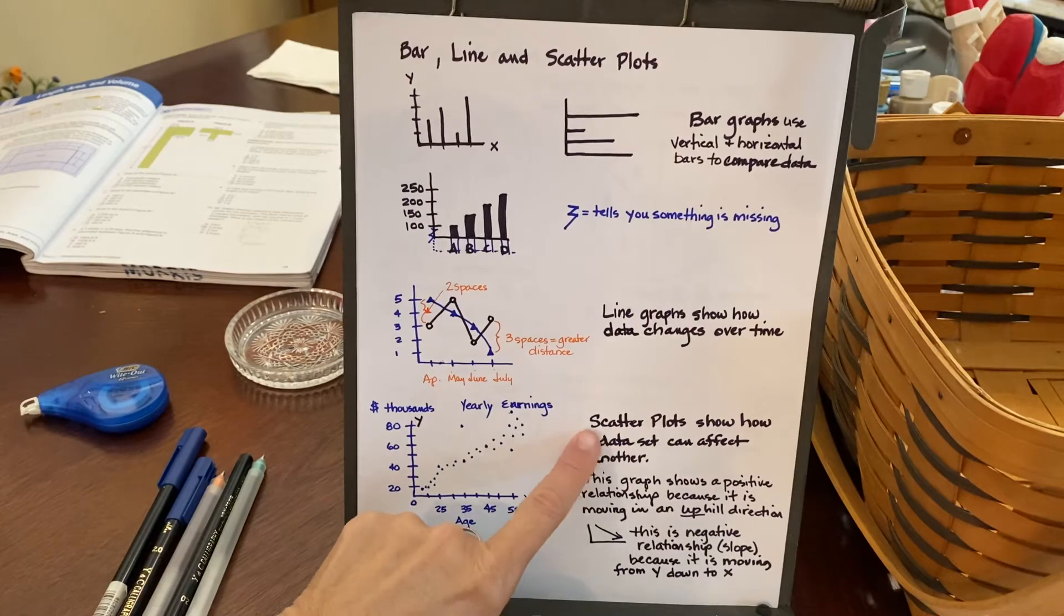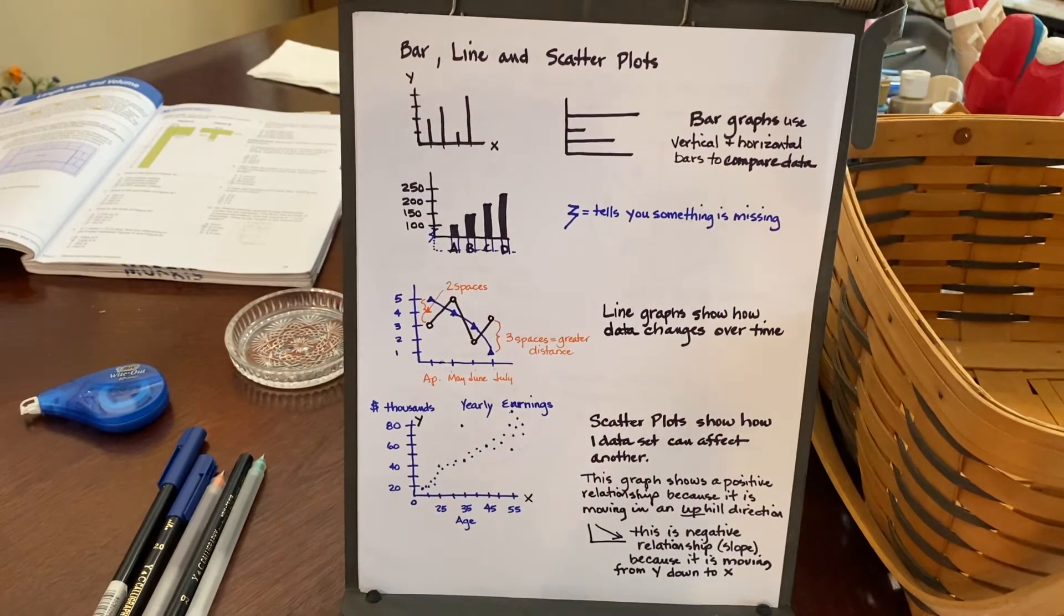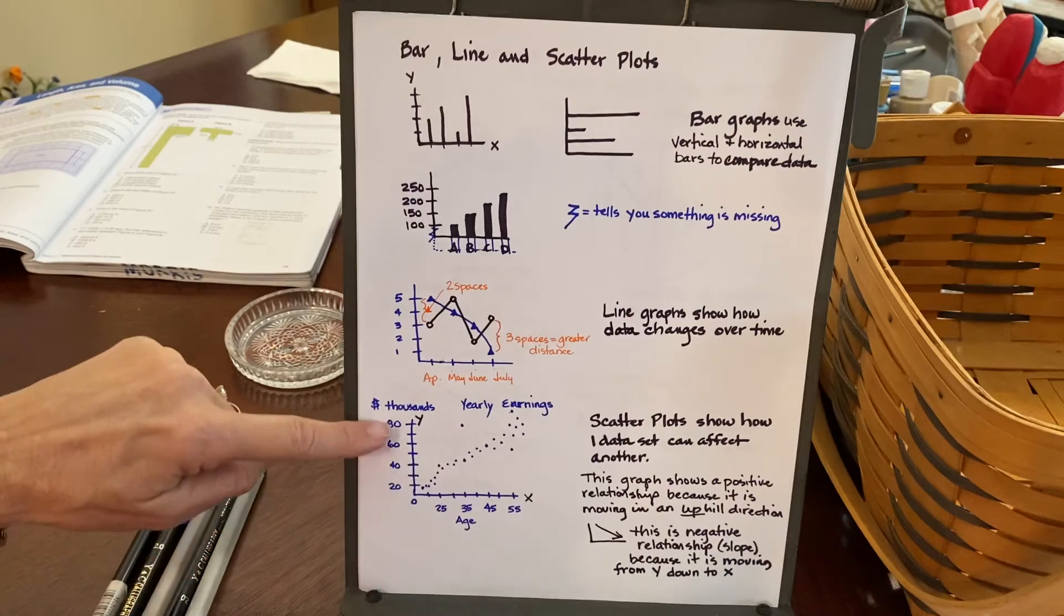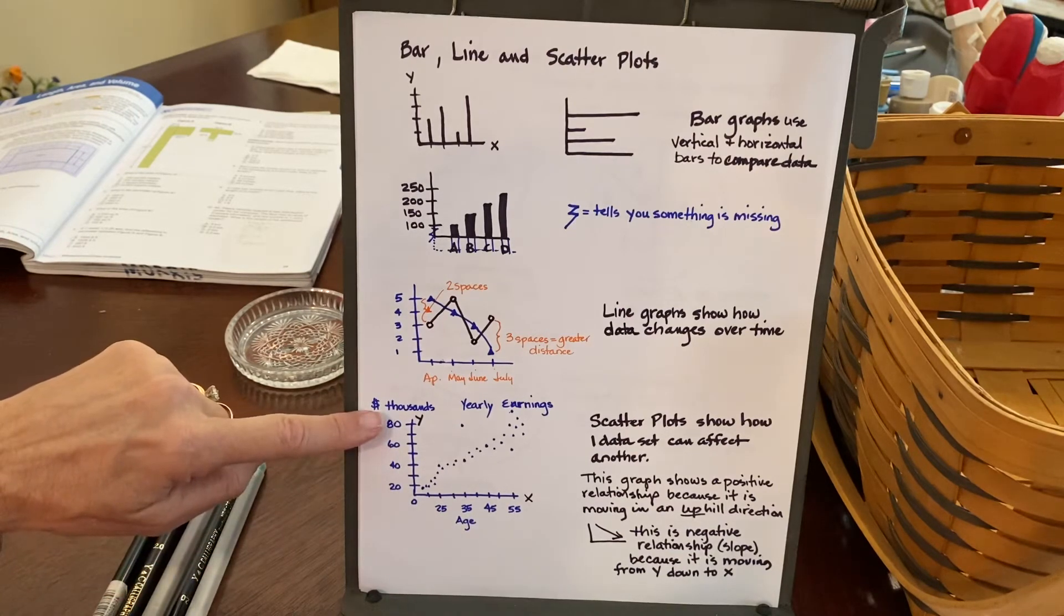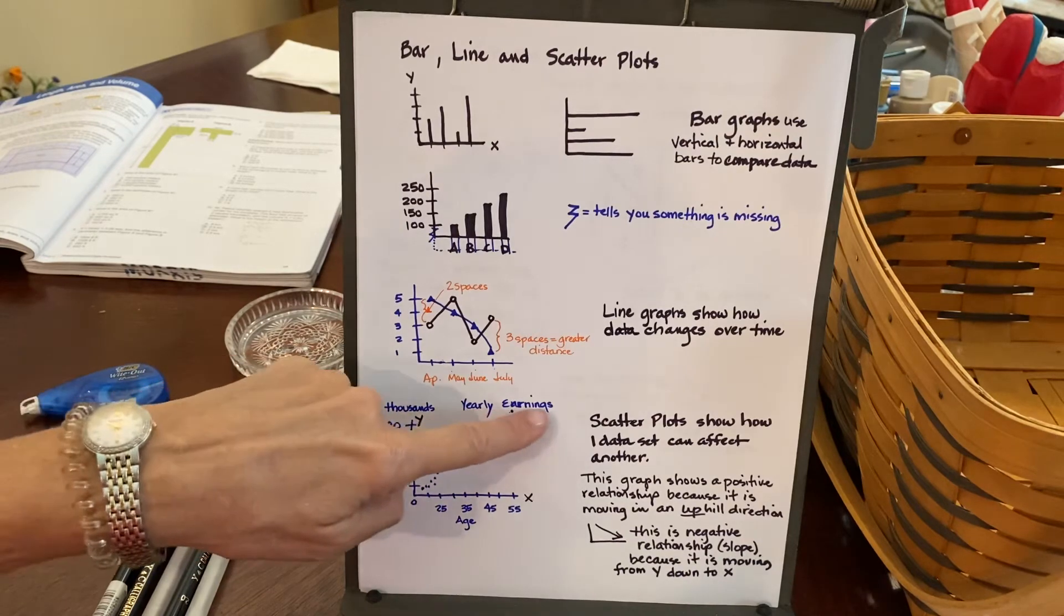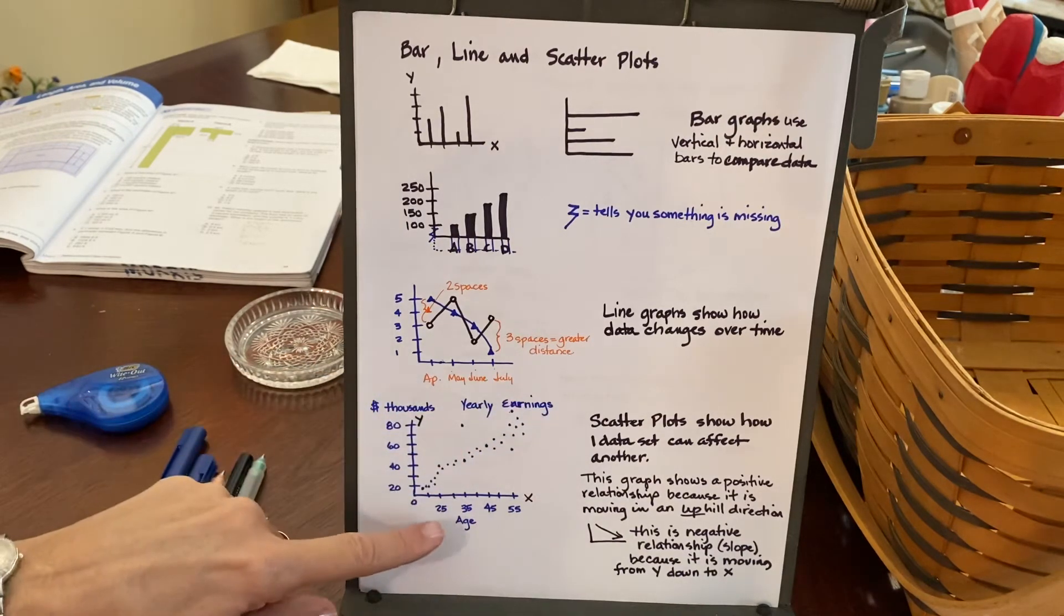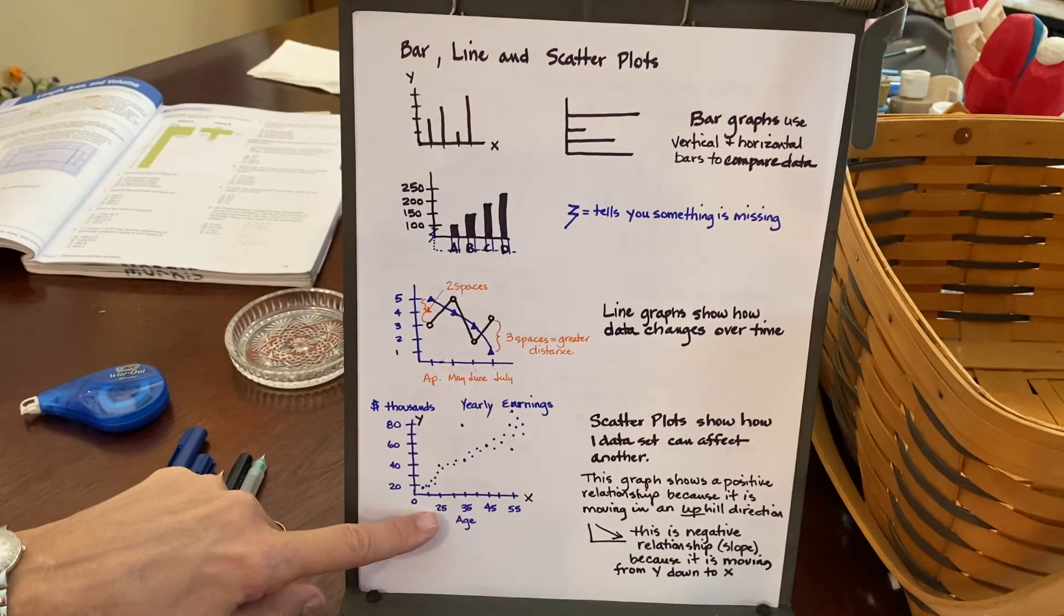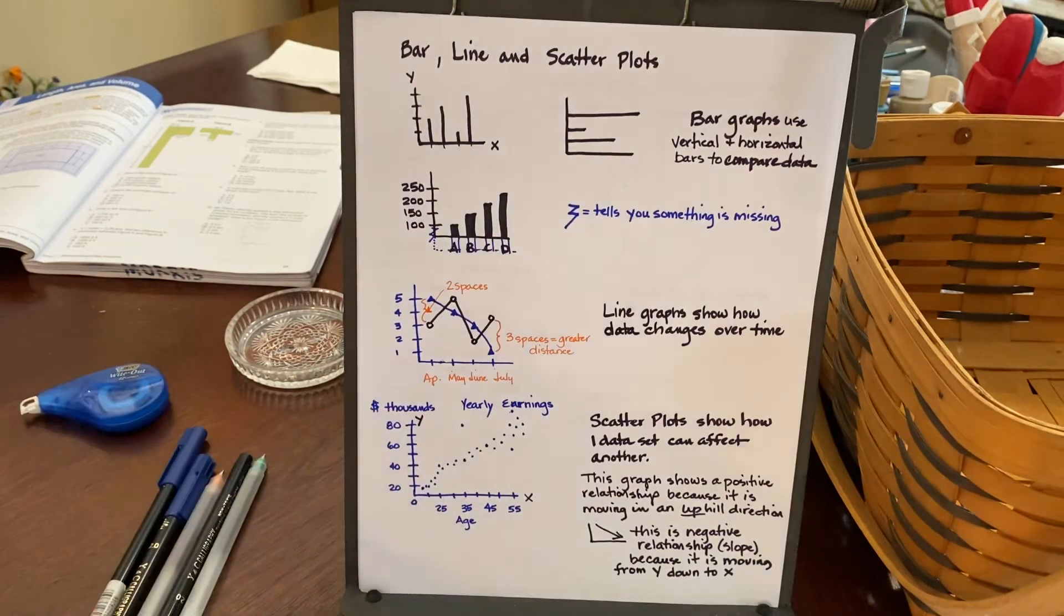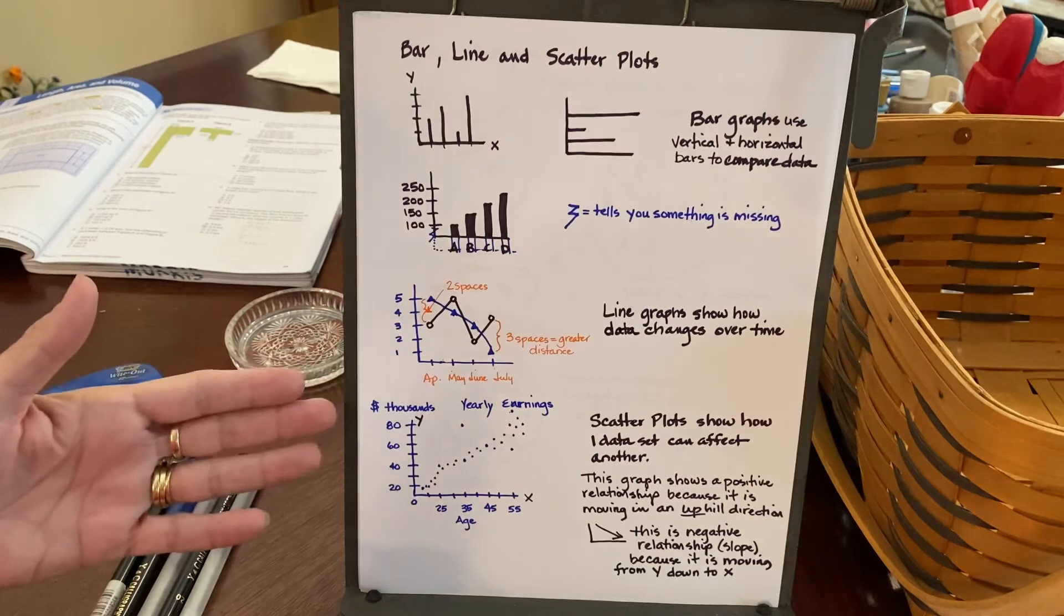If we go down to the scatter plots, they show how one set of data can affect another. So for instance, this is age down here at the bottom. And this is money in thousands of dollars. And the title of it is important. It says yearly earnings.